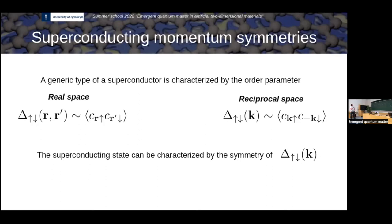One of the simplest ideas to classify superconducting orders is to expand the gap function in harmonics — l equal to 0, 1, 2, 3, and so forth — the same way as in molecular physics. If the gap matrix is l equal to 0, a constant, you have an S-wave superconductor. If l equal to 1 (p orbitals), you have p-wave superconductivity. L equal to 2 gives d-wave, l equal to 3 gives f-wave, l equal to 4 gives g-wave. These names all come from the expansion in momentum space of this matrix.